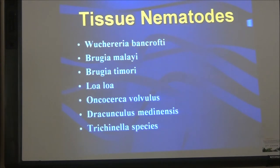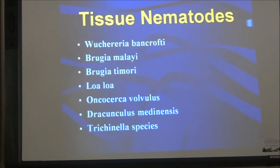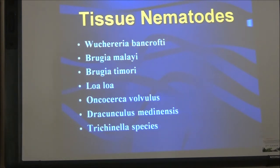Amongst the nematodes, they are divided into intestinal and tissue nematodes. We are going to discuss tissue nematodes, and there is a list: Wuchereria bancrofti, Brugia malayi, Brugia timori, Loa loa, Onchocerca volvulus, Dracunculus medinensis, and Trichinella species.